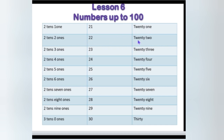Then 22: T, W, E, N, T, Y — 22. Then 23, 24, 25, 26, 27, 28, 29, then 30. Please spell 30.